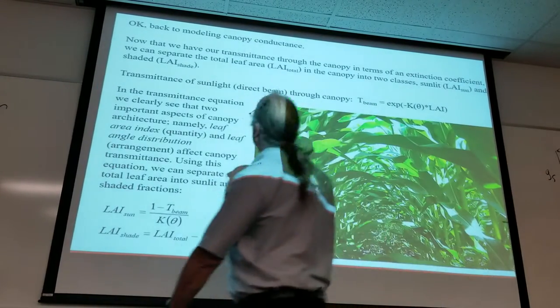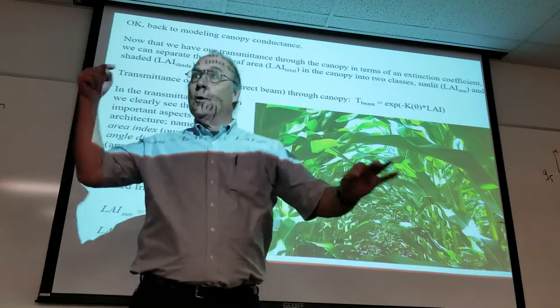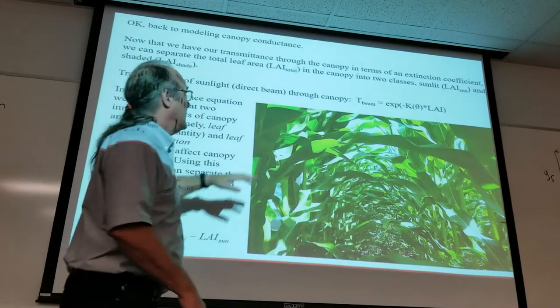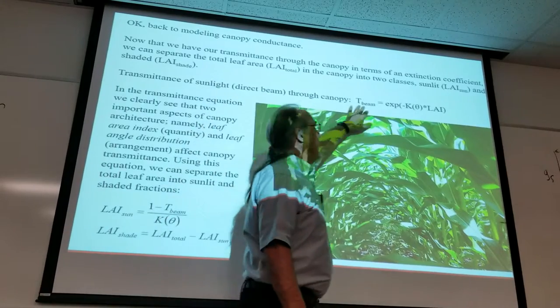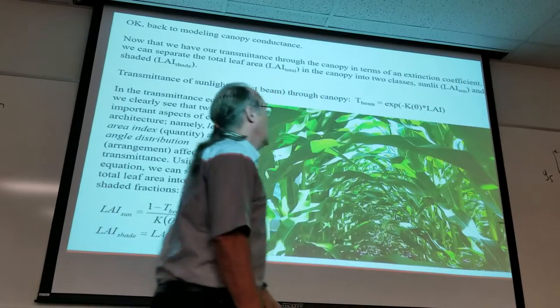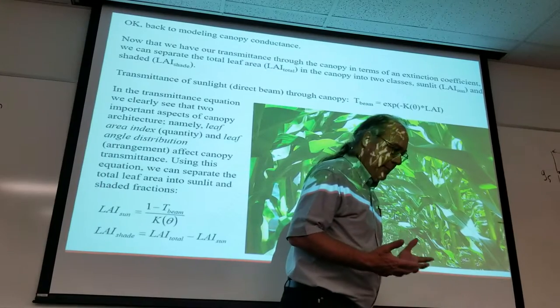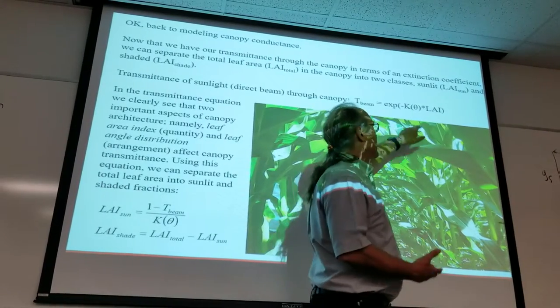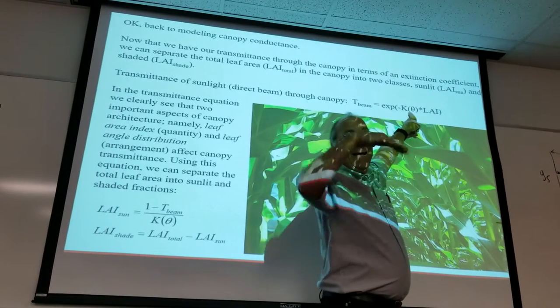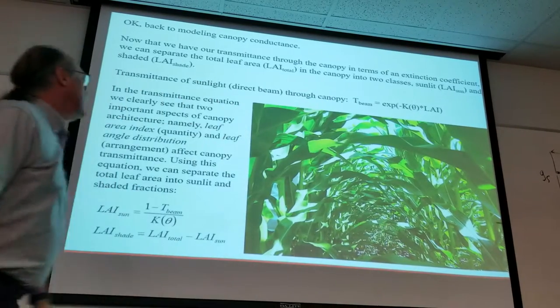Here's how to do it. The transmittance of sunlight through the canopy, or Warren Wilson's needle, or his inclined point quadrat, or whatever else you want to use. The transmittance through the canopy is given by e to minus k of theta times the leaf area index. This clearly shows the important features of the canopy that we have to consider, namely how much leaf area is in the canopy and the distribution, the angular distribution of that leaf area in the canopy.